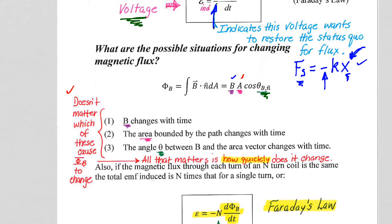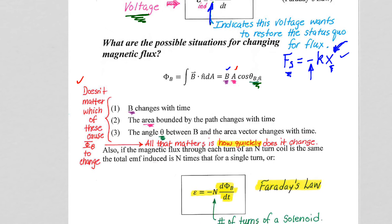So B can be changing with time as it was when we moved the permanent magnet towards the coil. We could have the area itself change. We could let it shrink down or expand, and that certainly would generate the current. Or we could have the angle between the B field and the area, the n hat vector change with time. And when we have our spinning turbines, that's exactly what happens.